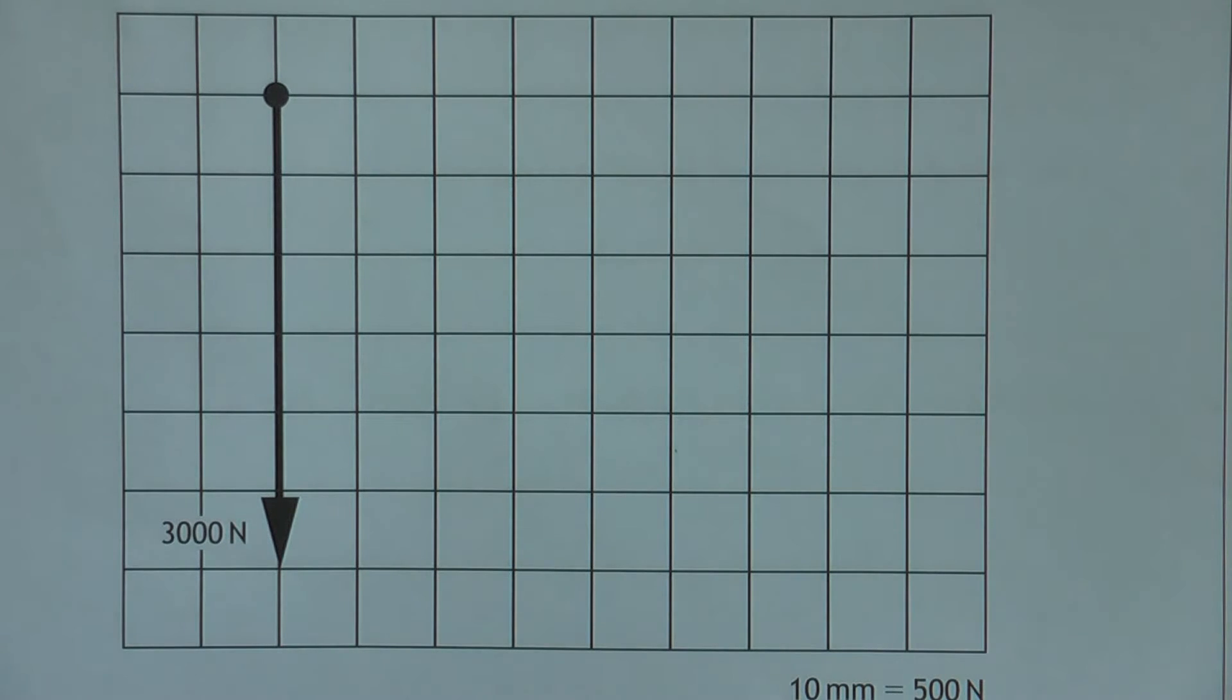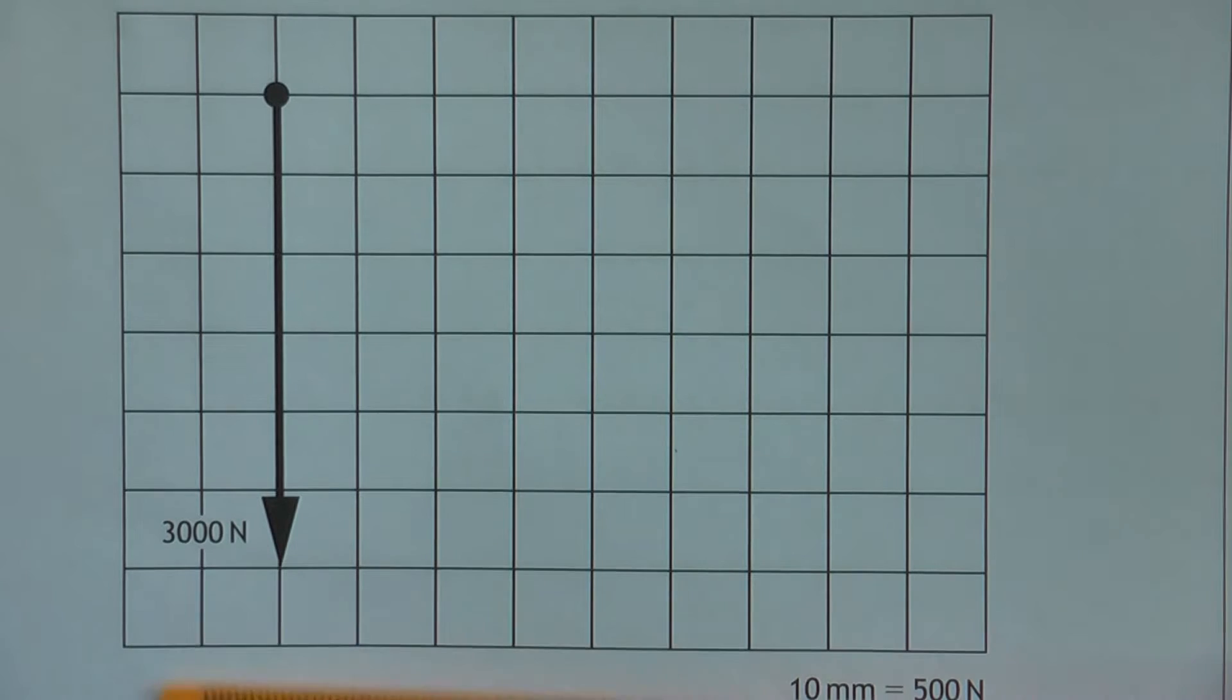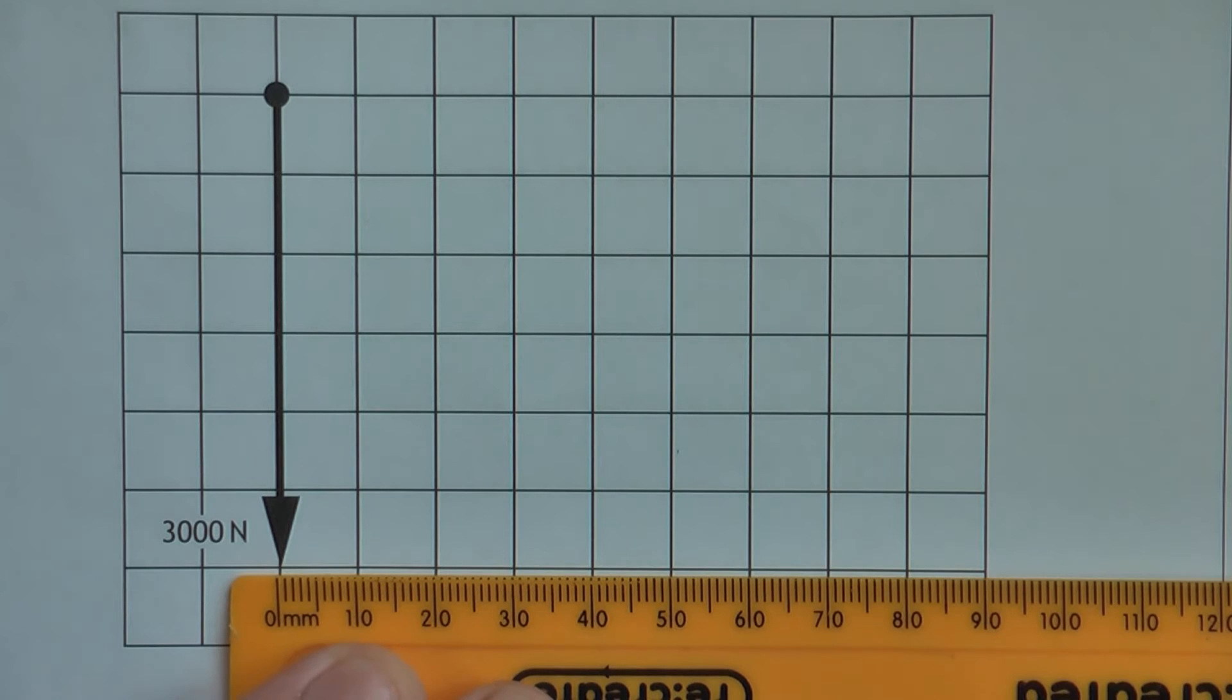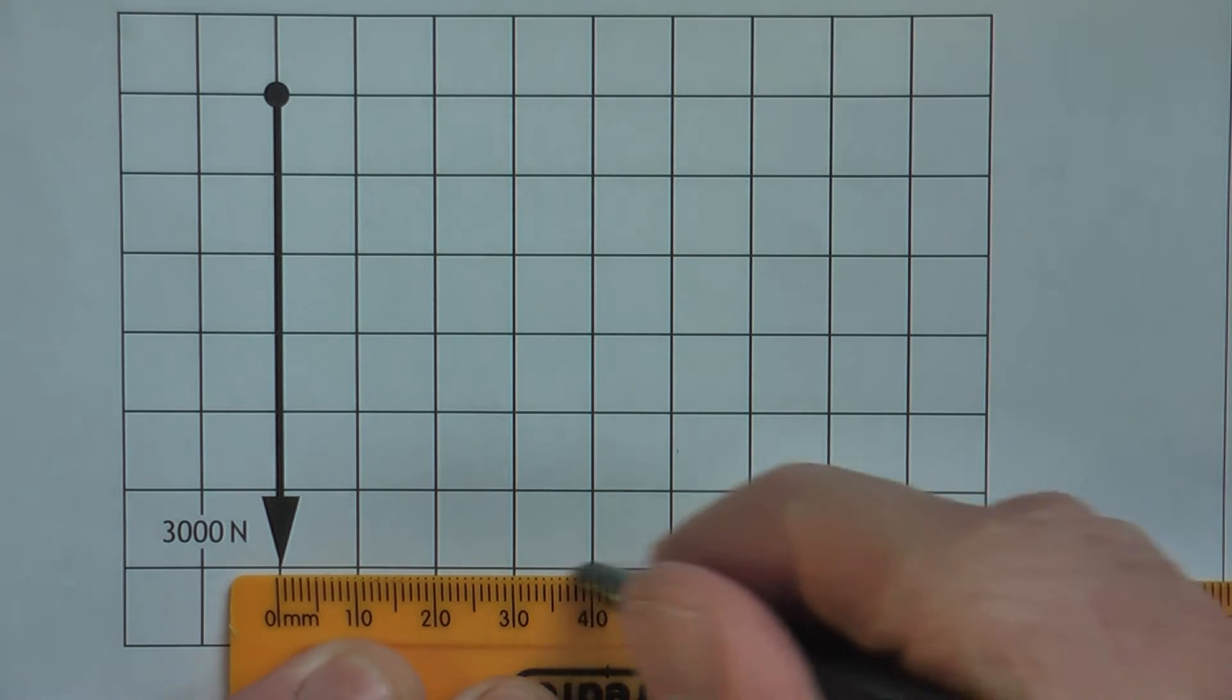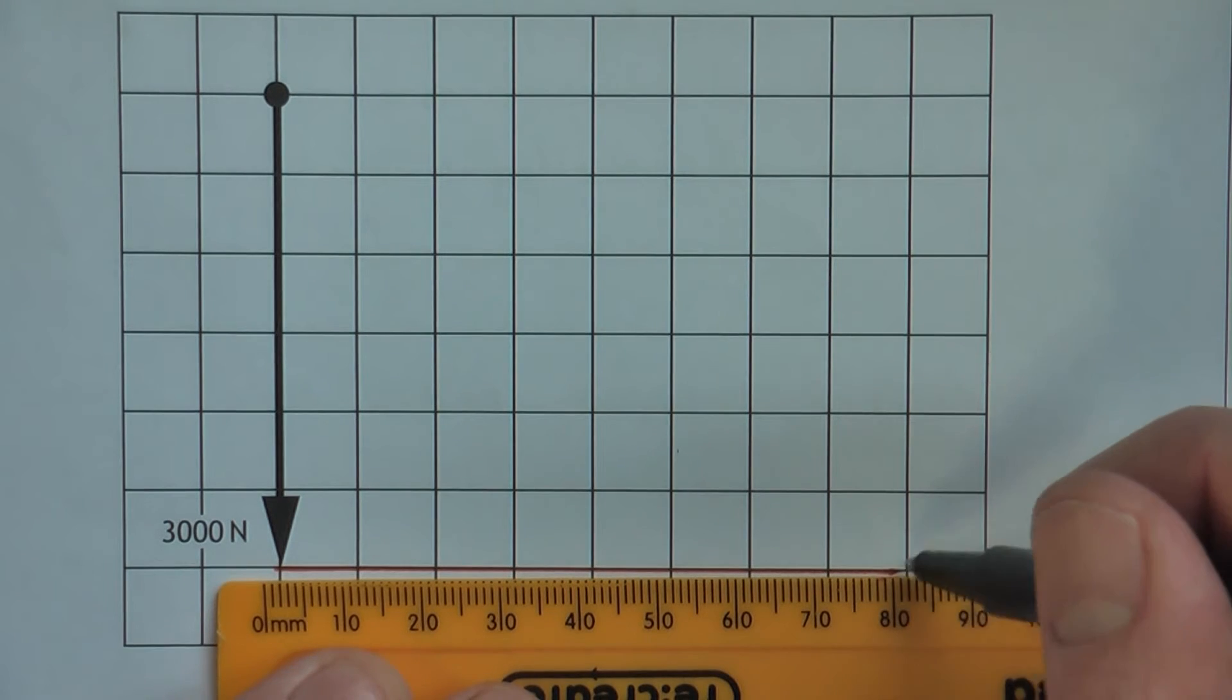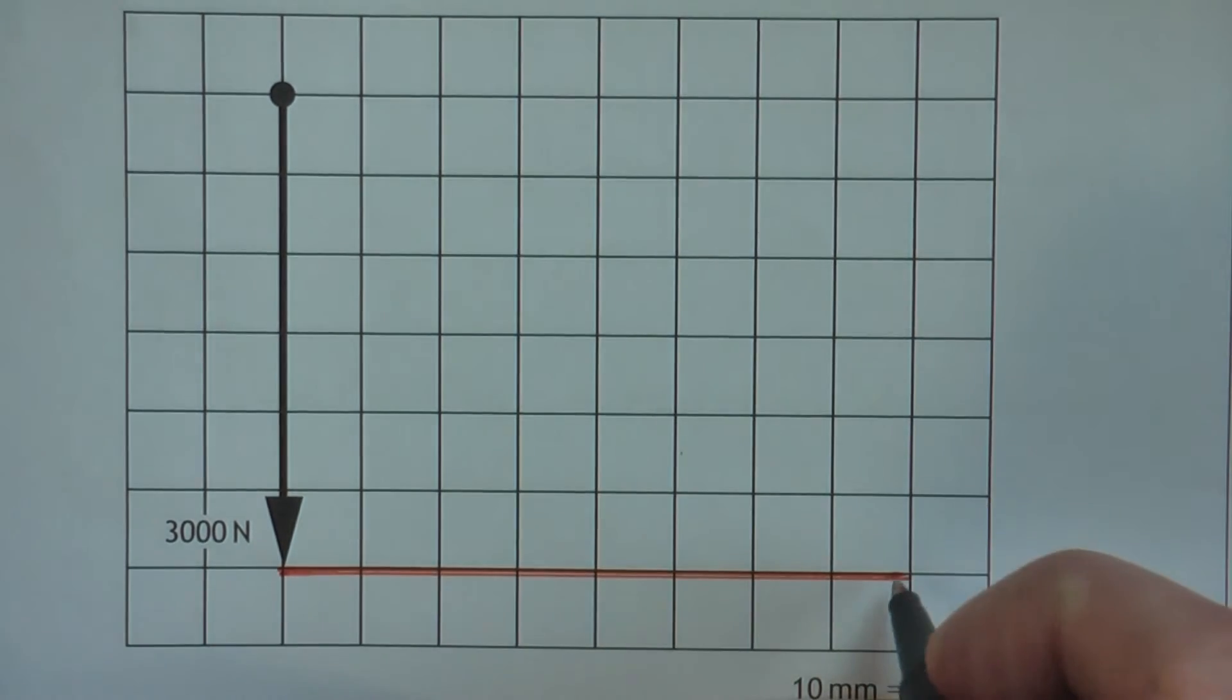So the next force to put in was a 4,000 newton force going that way. So 4,000 newtons will be 8 boxes. You can draw that in. Now, put on your arrowhead.